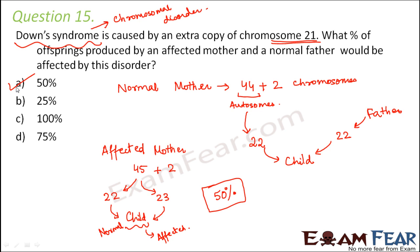This is how chromosomal disorders get passed on to the next generation. Even though there is no Mendelian inheritance pattern, the concepts of inheritance still apply in understanding the probability of a child being affected.